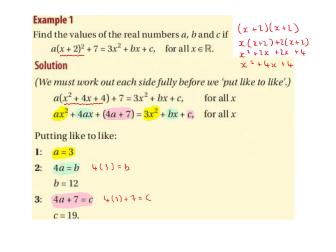The question asked us to find the values of the real numbers a, b, and c. We found a to be 3, b to be 12, and c to be 19. What we did was multiply out the brackets on the left-hand side — there were no brackets on the right to multiply out. We then grouped together our x squared, our x, and our constant. Then we put like to like by matching up the x squareds, matching up the x's, and matching up the constants, and solved for a, b, and c.